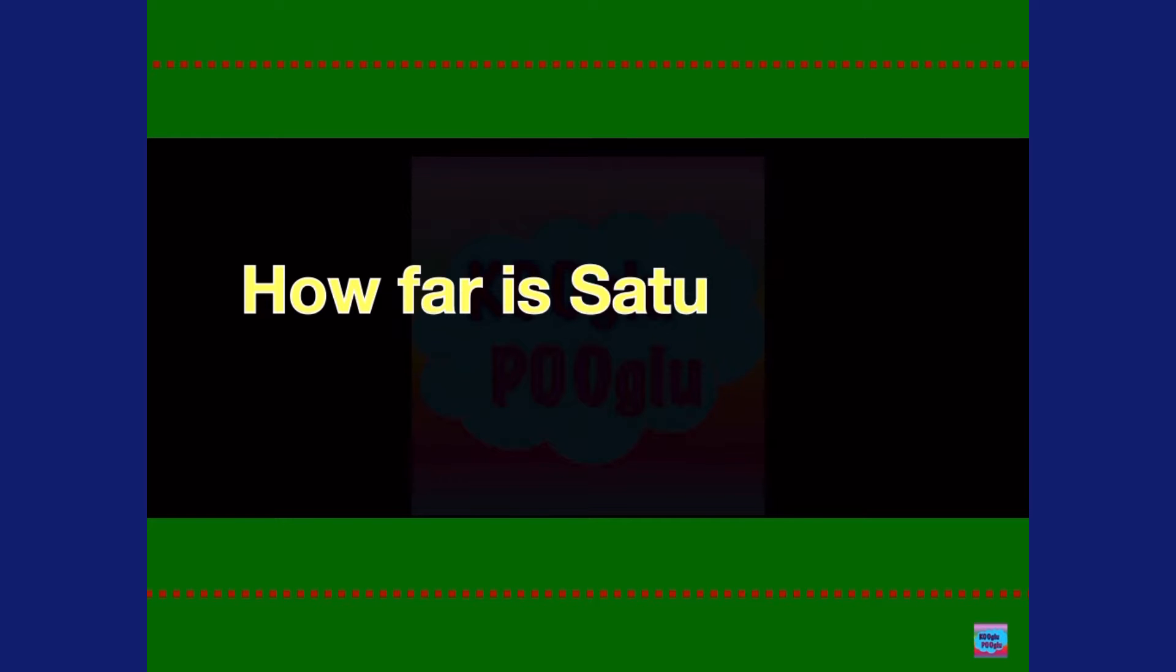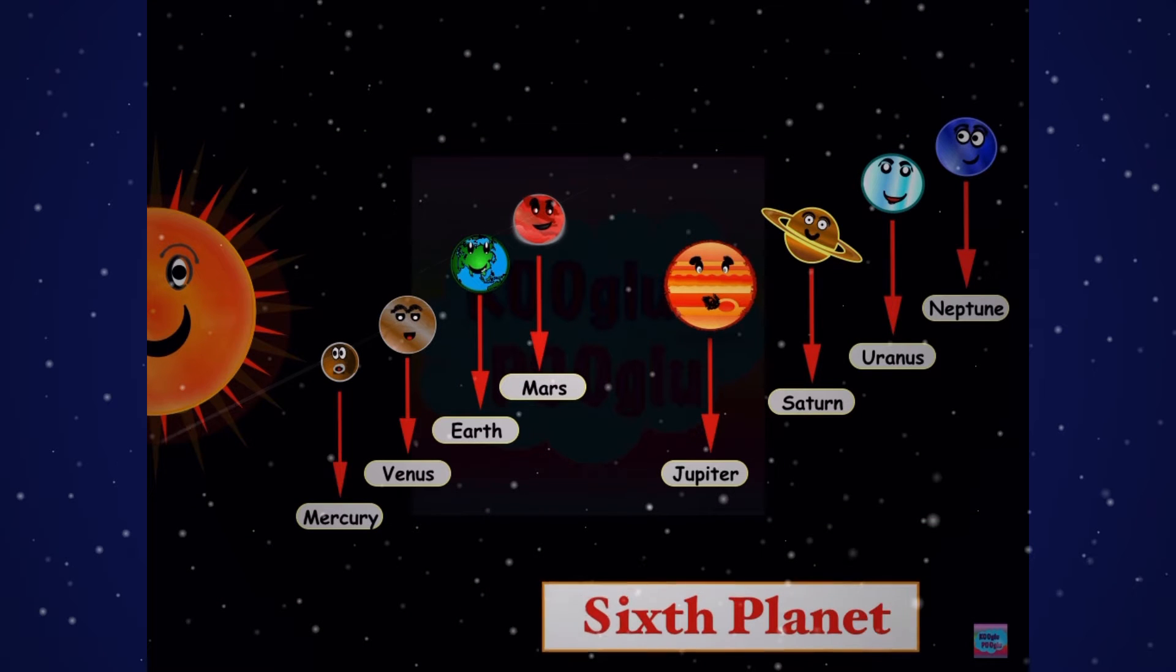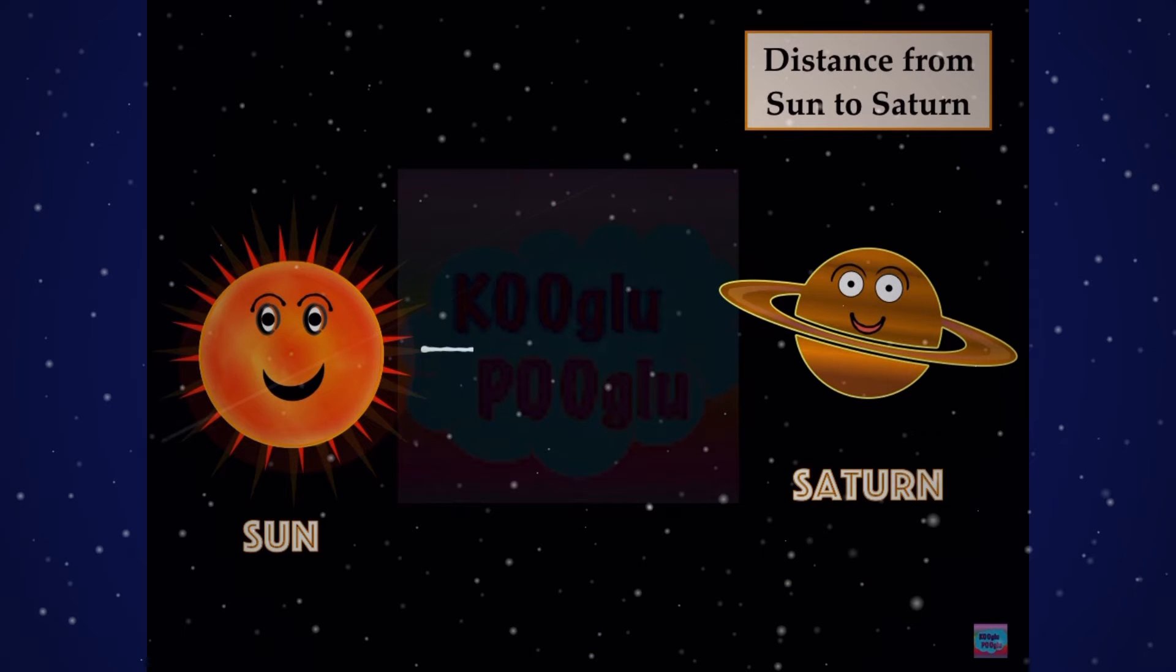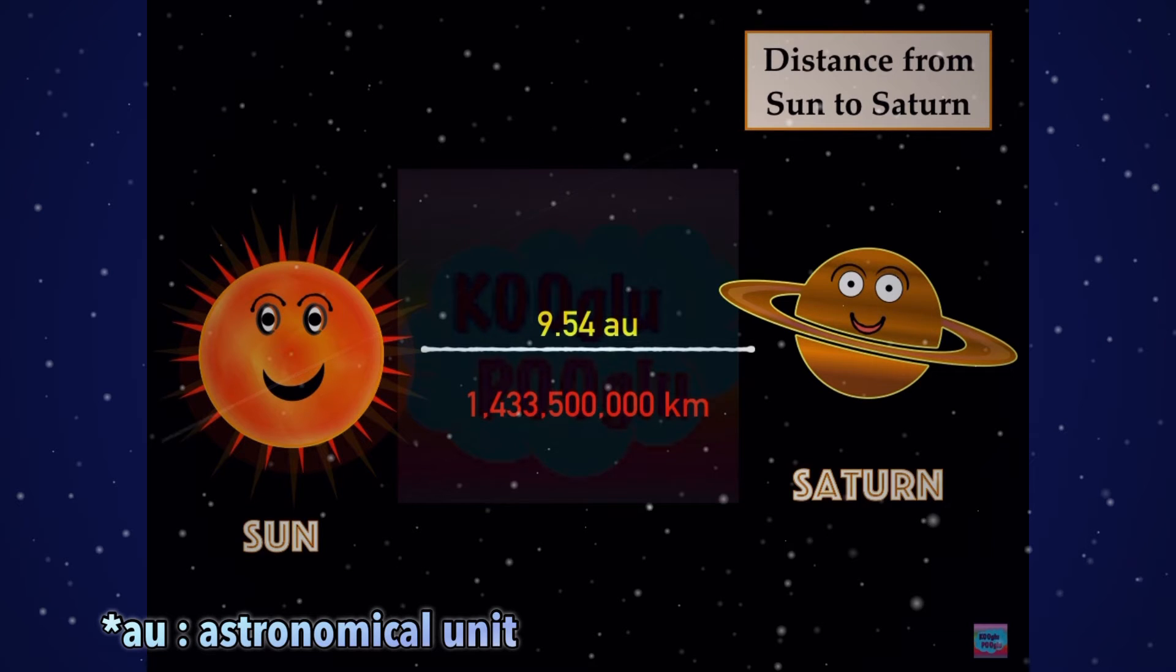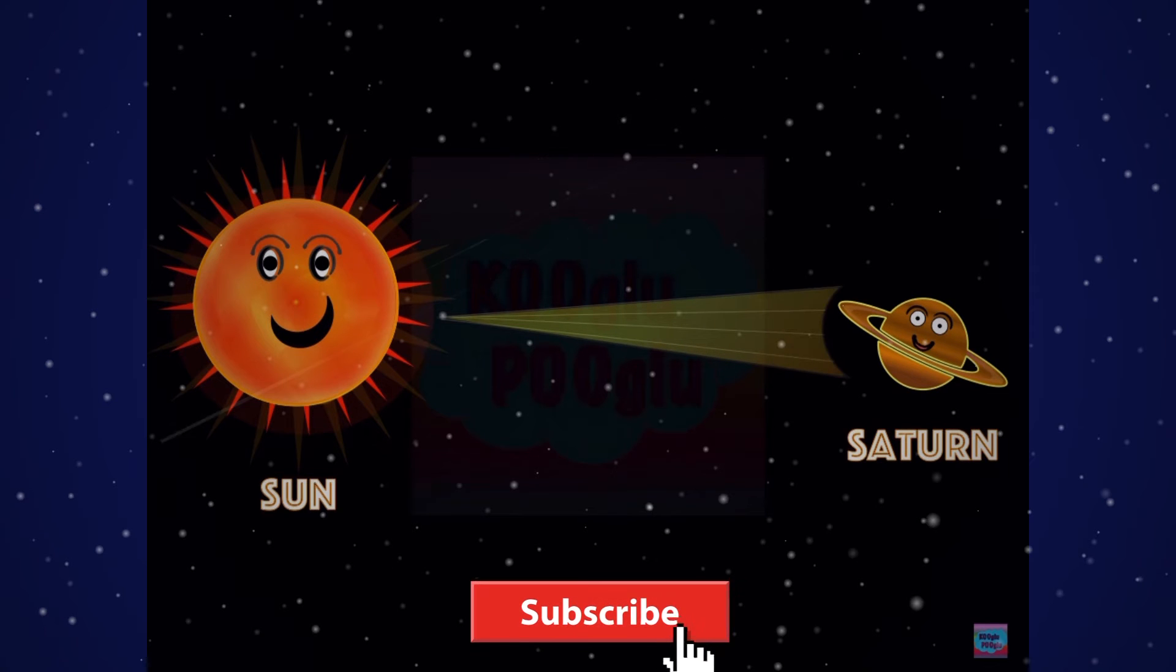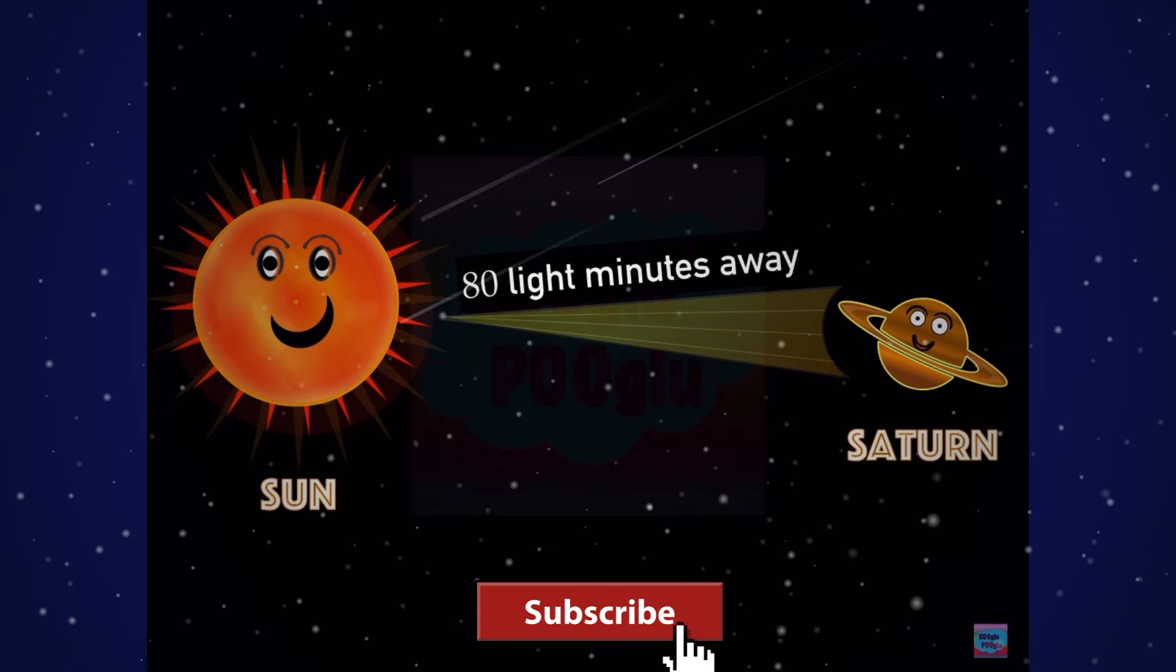How far is Saturn from the Sun? Saturn is the sixth planet from the Sun. The distance from Sun to Saturn is around 9.54 AU, and the distance in light minutes is 80 light minutes. So Sun to Saturn is 80 light minutes.